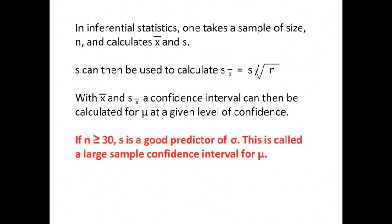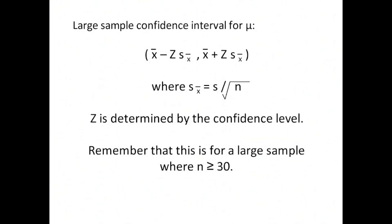If n is greater than or equal to 30, s is a fairly good predictor of sigma. This is called a large sample confidence interval for mu. A large sample confidence interval for mu can be calculated with the following interval: x-bar minus z times s of x-bar and x-bar plus z times s of x-bar where s of x-bar equals s divided by the square root of n. z is determined by the confidence level.